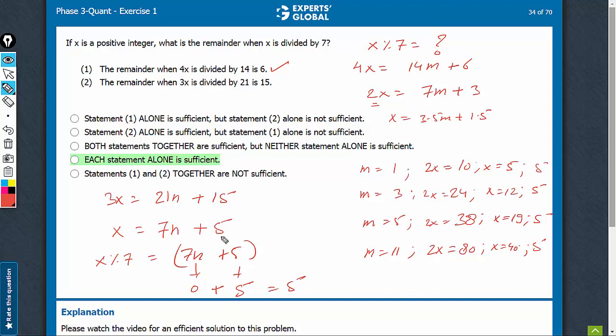So statement 2 quite easily suggests that the remainder is going to be 5 every time. 1 is sufficient, 2 is sufficient, D is the right answer. This is a difficult one.